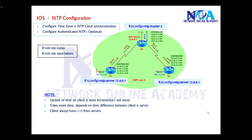Now let's see the NTP configuration. In this case I'm using three routers: Router 1, Router 2, and Router 3. I want to make Router 2 my NTP server. Whichever device you select as a server, we need to use the NTP master command to designate that device as the server.